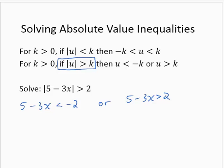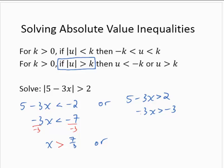We would solve each of these inequalities. For the first, I would subtract 5 from both sides: negative 3x is less than negative 7. Dividing by negative 3 — be careful, when you divide an inequality by a negative number, you flip the symbol of inequality — so x is greater than 7 thirds. Or, subtracting 5 from both sides of the second: negative 3x is greater than negative 3. Again, divide by negative 3 and flip the inequality symbol, so x is less than 1.